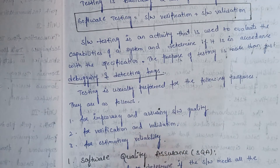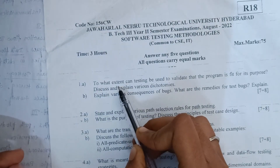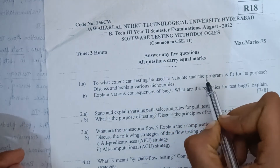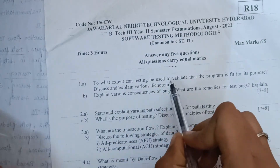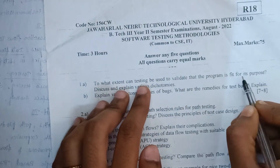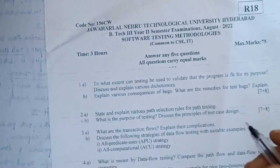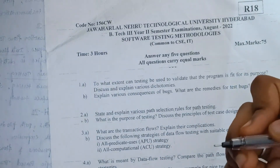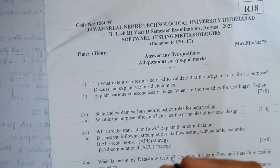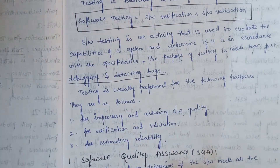Now we have a previous exam question: 'To what extent can testing be used to validate that the program is fit for its purpose? Discuss and explain various dichotomies.' You must explain this question. The answer covers: the purpose of testing — improving and assuring software quality, and verification and validation.